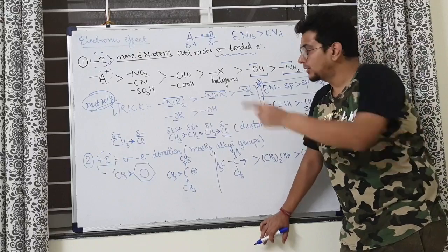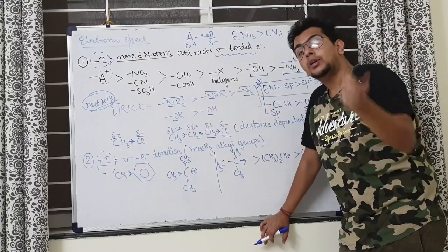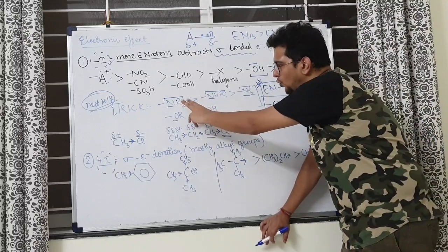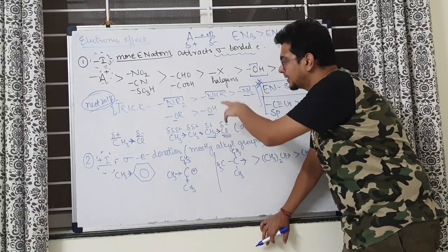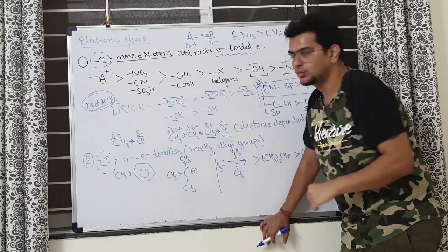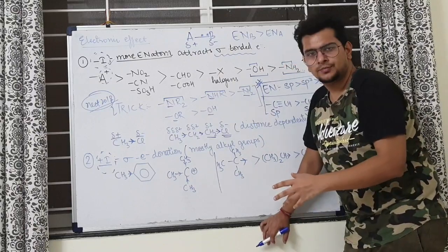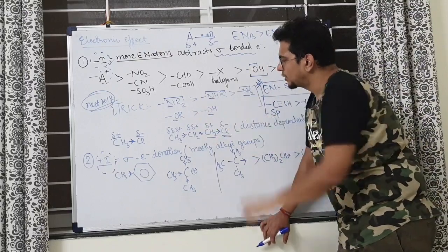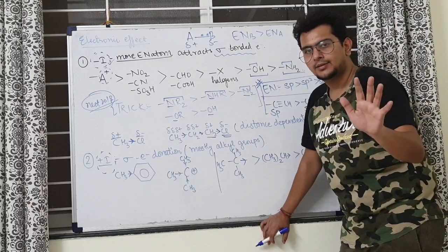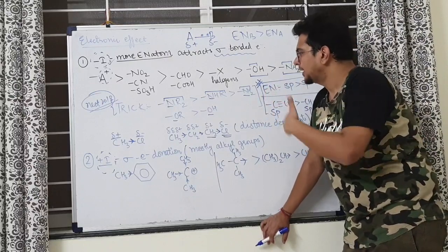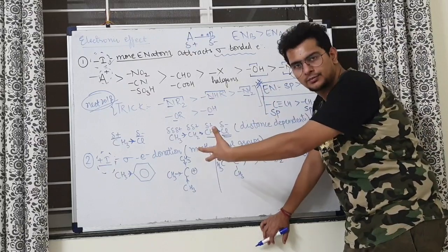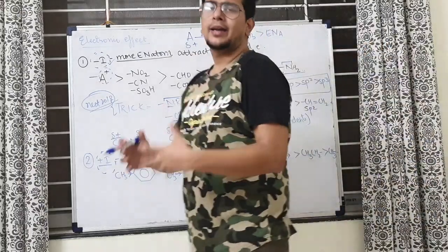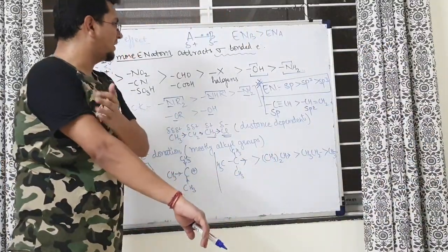So NR2 will have more -I than NHR, which has more than NH2. This came in NEET 2018. If you remember this logic, it'll be easier in the exam. OR is more than OH. Why do more alkyl groups increase electronegativity and -I? It's not very important, but I can explain if you're strong in chemical bonding.